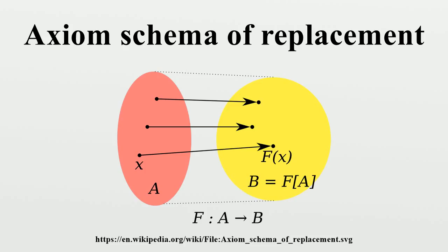The axiom schema of replacement is not necessary for the proofs of most theorems of ordinary mathematics. Indeed, Zermelo's set theory already can interpret second-order arithmetic and much of type theory in finite types, which in turn are sufficient to formalize the bulk of mathematics. A notable mathematical theorem that requires the axiom of replacement to be proved in ZF is the Borel determinacy theorem. The axiom of replacement does have an important role in the study of set theory itself: the replacement schema is needed to construct the von Neumann ordinals from ω+2 onwards. Without replacement, it would be necessary to find some other representation for ordinal numbers. Although the axiom schema of replacement is a standard axiom in set theory today, it is often omitted from systems of type theory and foundation systems in topos theory.